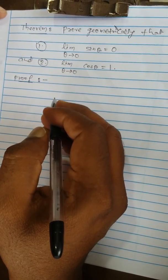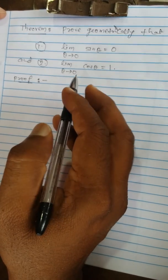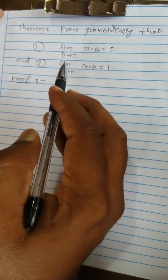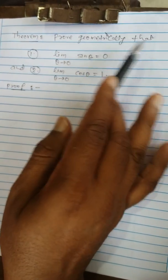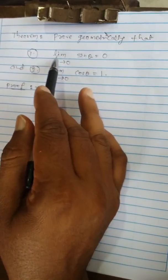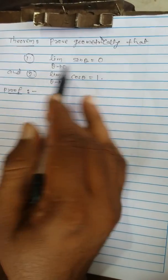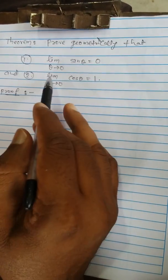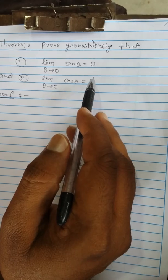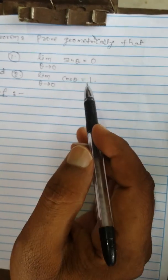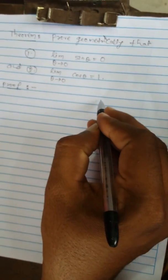Today we are going to establish the limit theorem. Theorem one: prove geometrically that limit as theta tends to 0 of sin theta equals 0, and limit as theta tends to 0 of cos theta equals 1. We are going to establish these results geometrically.